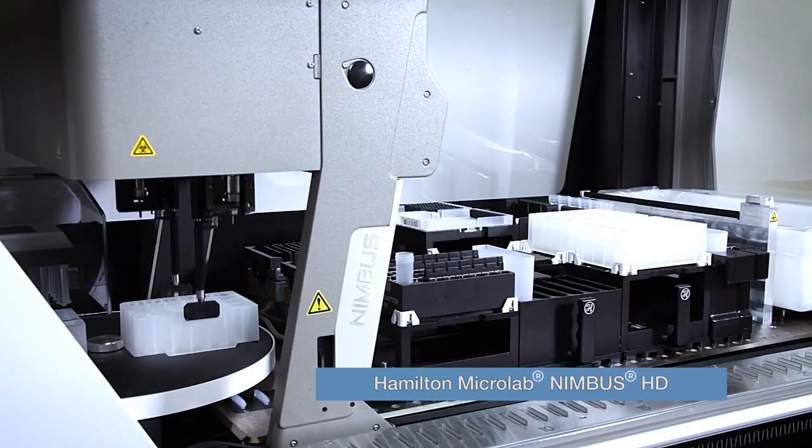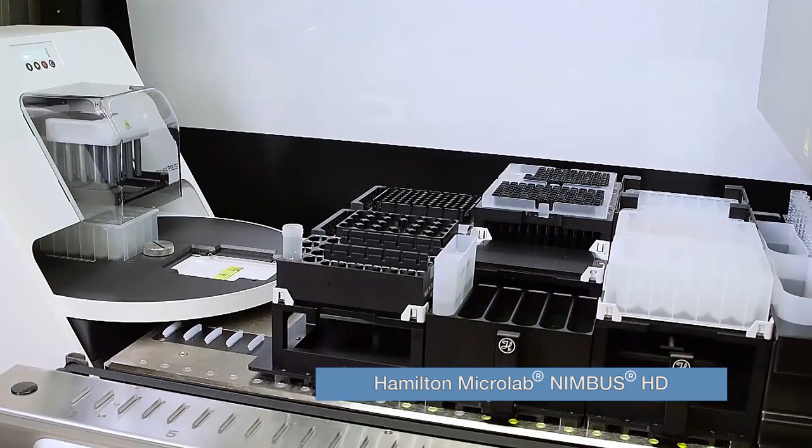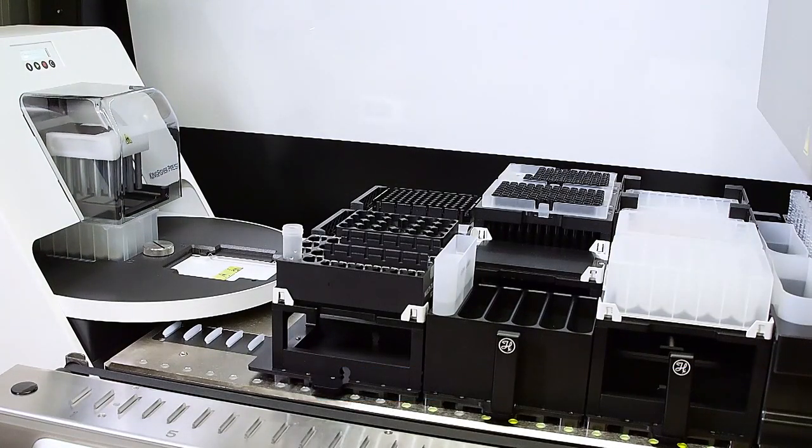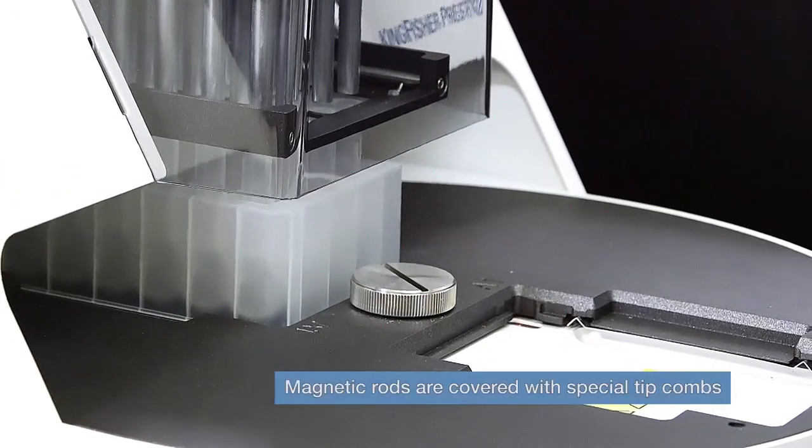Using the Hamilton Microlab Nimbus HD as an example, watch as the Kingfisher Presto and built-in turntable with two plate positions fit easily into an automated system.